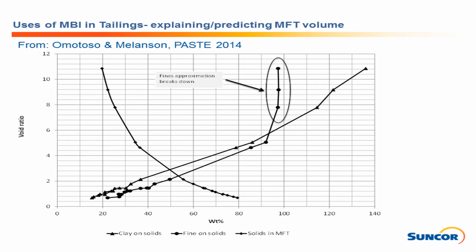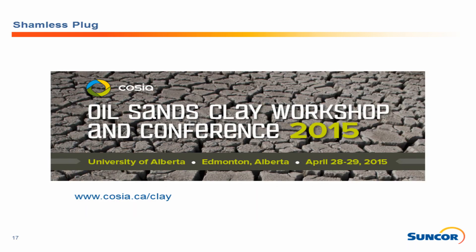To show one relevant application: Omatoso and Melanson presented at Paste and demonstrated that you can use the methylene blue index — or percent solids by methylene blue — to predict the volume of MFT you're going to get. Fines content breaks down after 100% fines, but at higher percentages of clay by methylene blue you still see a linear correspondence with volume. More clay means more fluid fine tailings. I'll leave it there and take questions. Shameless plug: COSIA clay conference at cosia.ca/clay — be there if you want to know more.